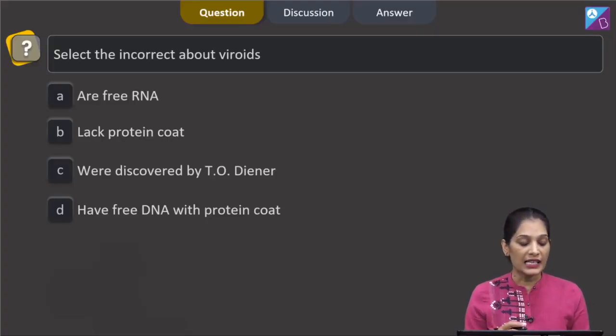This question says, select the incorrect about viroids. Viroids were discovered by T.O. Diener and they are free RNA particles. They are infectious.